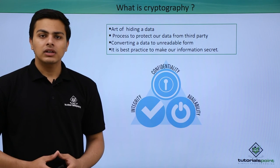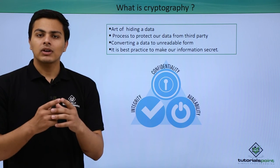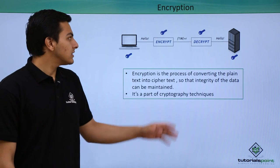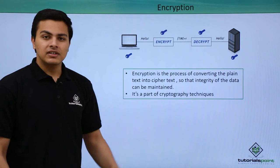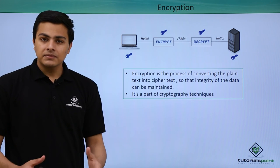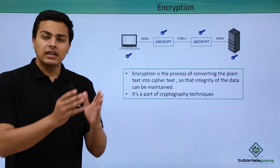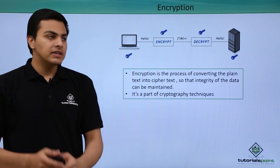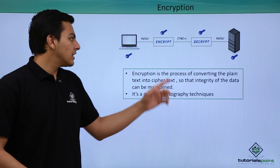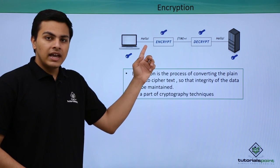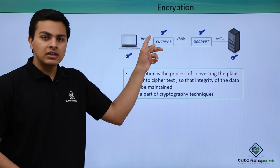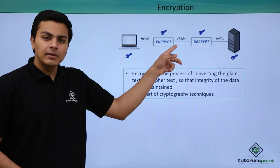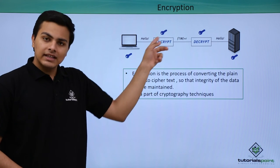Now let's talk about one of the most popularly used cryptography techniques to protect our data, and that technique is called encryption. So what is encryption? Encryption is actually a process of converting our plain text into a ciphertext. For example, here is our plaintext 'hello,' and after encryption our text becomes an unreadable form — this is called ciphertext.